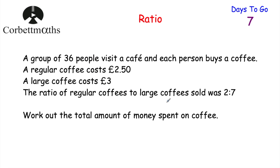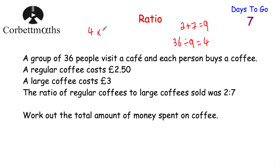First I'm going to work out how many regular and large coffees were sold. There are 36 people and they each bought one coffee, so we're going to share 36 in the ratio 2 to 7. I do 2 plus 7 equals 9, then 36 divided by 9 equals 4 — so there are 4 in each part. Multiplying: 4 times 2 equals 8 regular coffees, and 4 times 7 equals 28 large coffees. So 8 regular and 28 large coffees were sold.